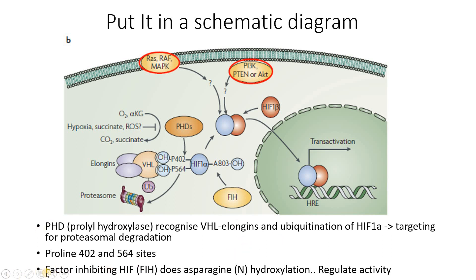We also have another protein known as factor inhibiting HIF-1, and what it does is hydroxylate the asparagine amino acid, and as a result it regulates the activity of HIF-1 alpha. But the key point is this: hypoxia prevents PHD from being activated, so no longer is hydroxylation occurring, and therefore it's not going to lead the way for proteasomal degradation — and HIF-1 alpha will bind with HIF-1 beta and trans-activate the genes.